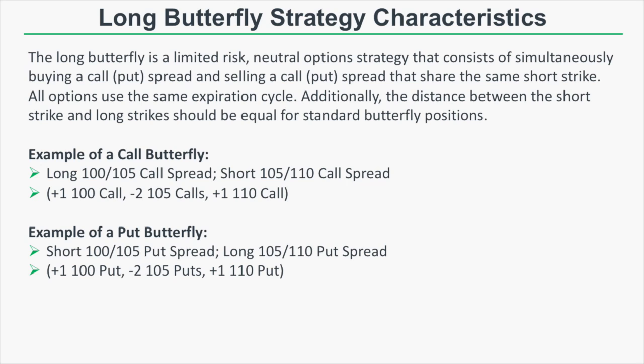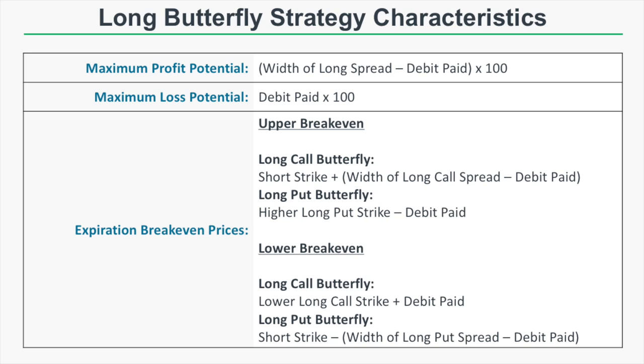We can construct the same position with put options by selling the 105/100 put spread and buying the 110/105 put spread. In that case we'll have one long 100 put, two short 105 puts, and one long 110 put. The short strike has two short options, with a long option below and a long option above the short strike. Those long options should be equidistant from the short strike in a traditional long butterfly spread.